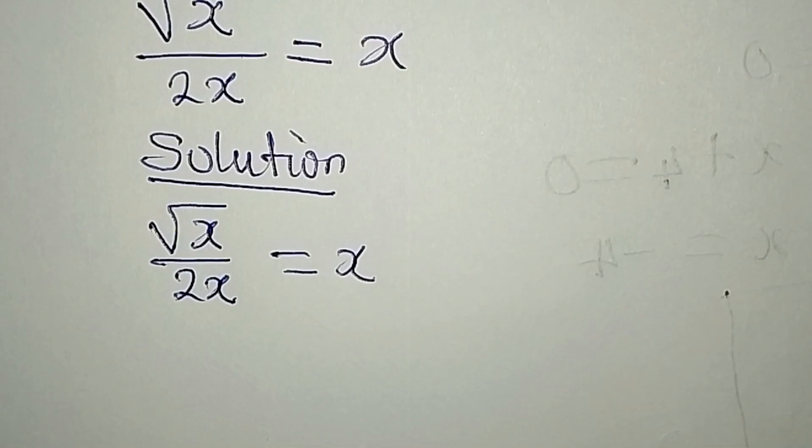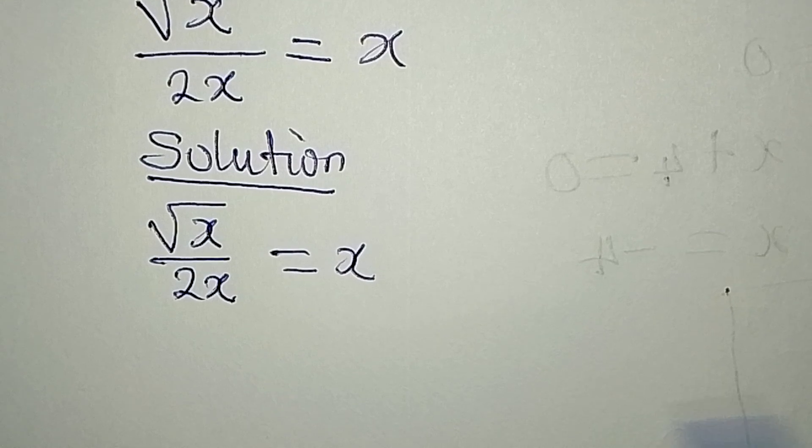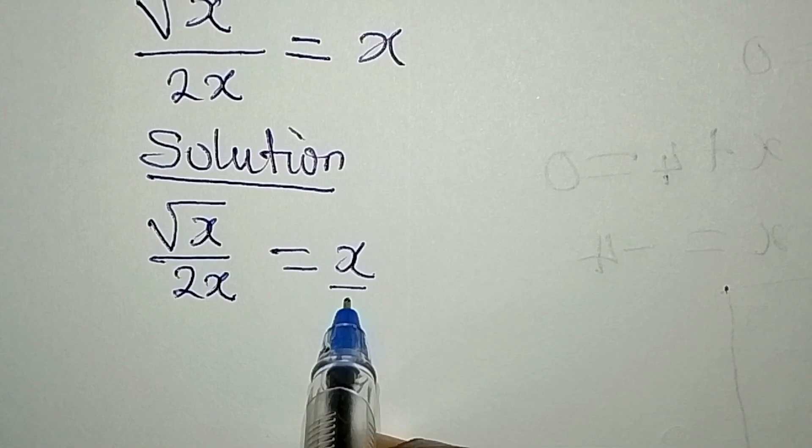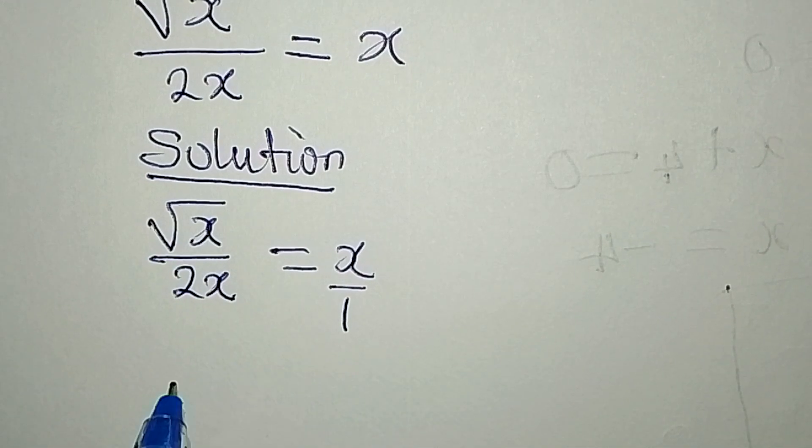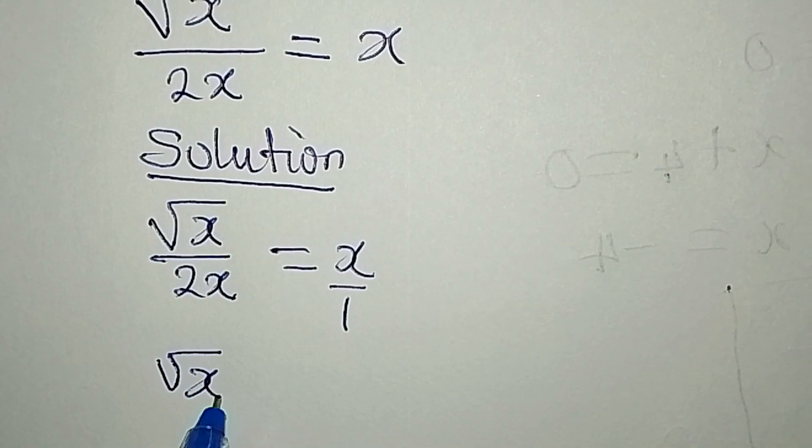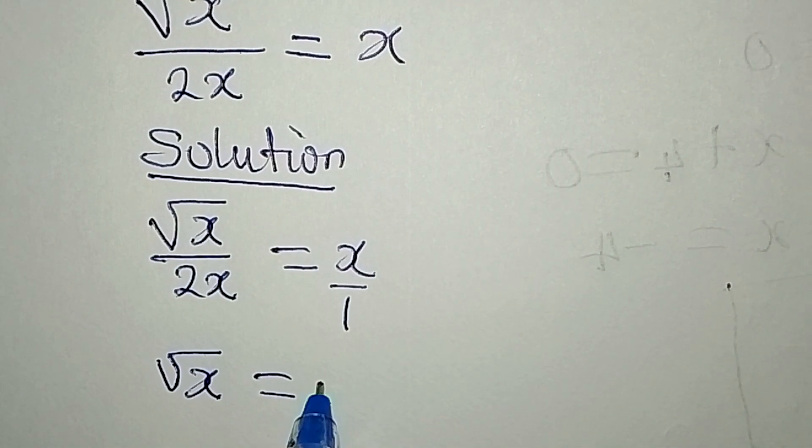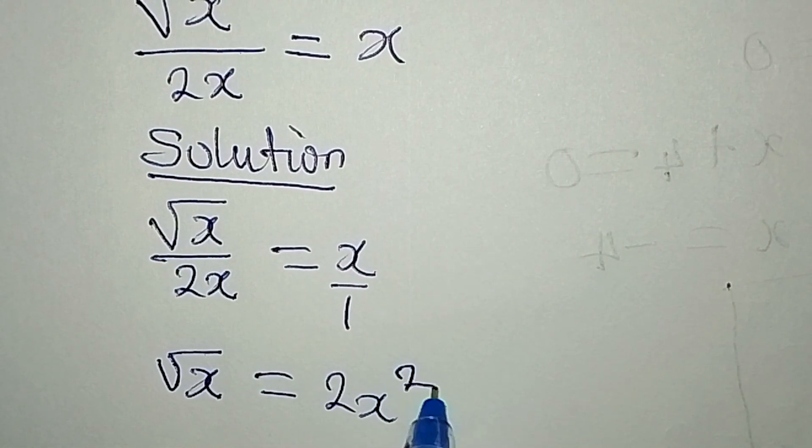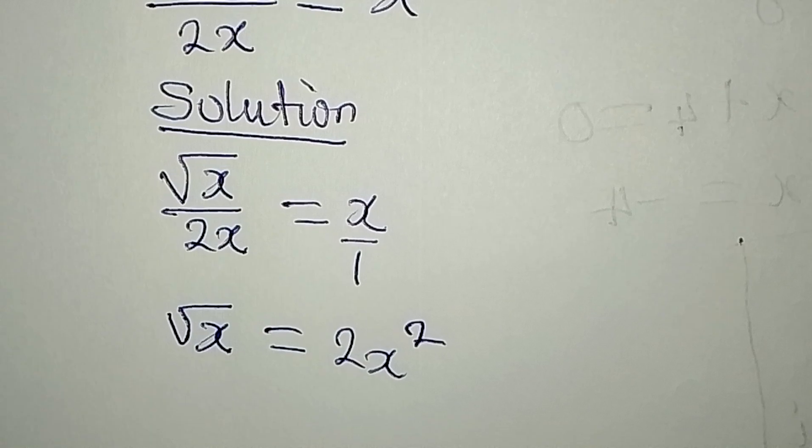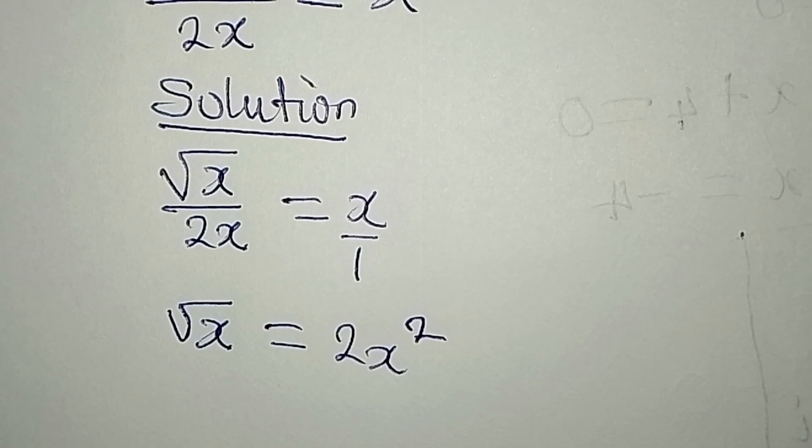So what do we do in this case? You can decide to cross multiply because we believe this is over one, so that square root of x times one will give us square root of x, and that will be equal to 2x multiply by x, which will be 2x squared.